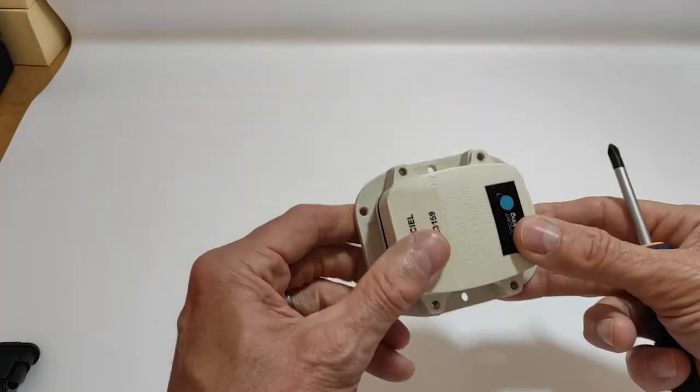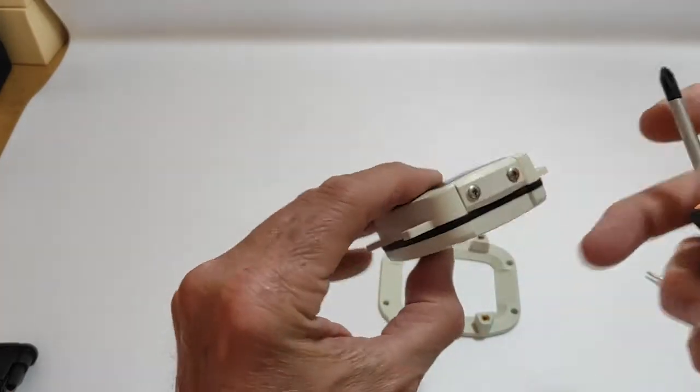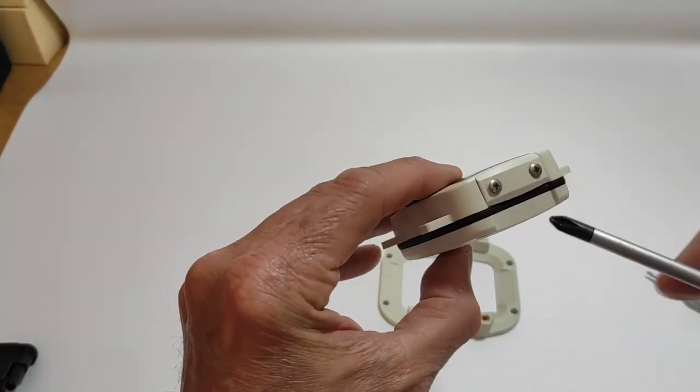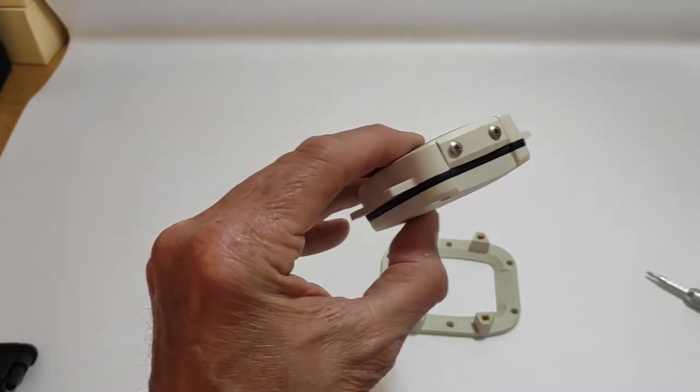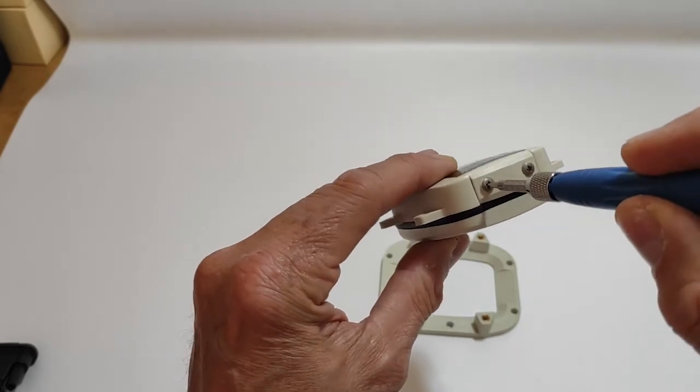Once you have unscrewed the four screws, you take off the device and then you need to open the front of the device. You have two small screws and you need another screwdriver, also a crosshead screwdriver but a smaller one.